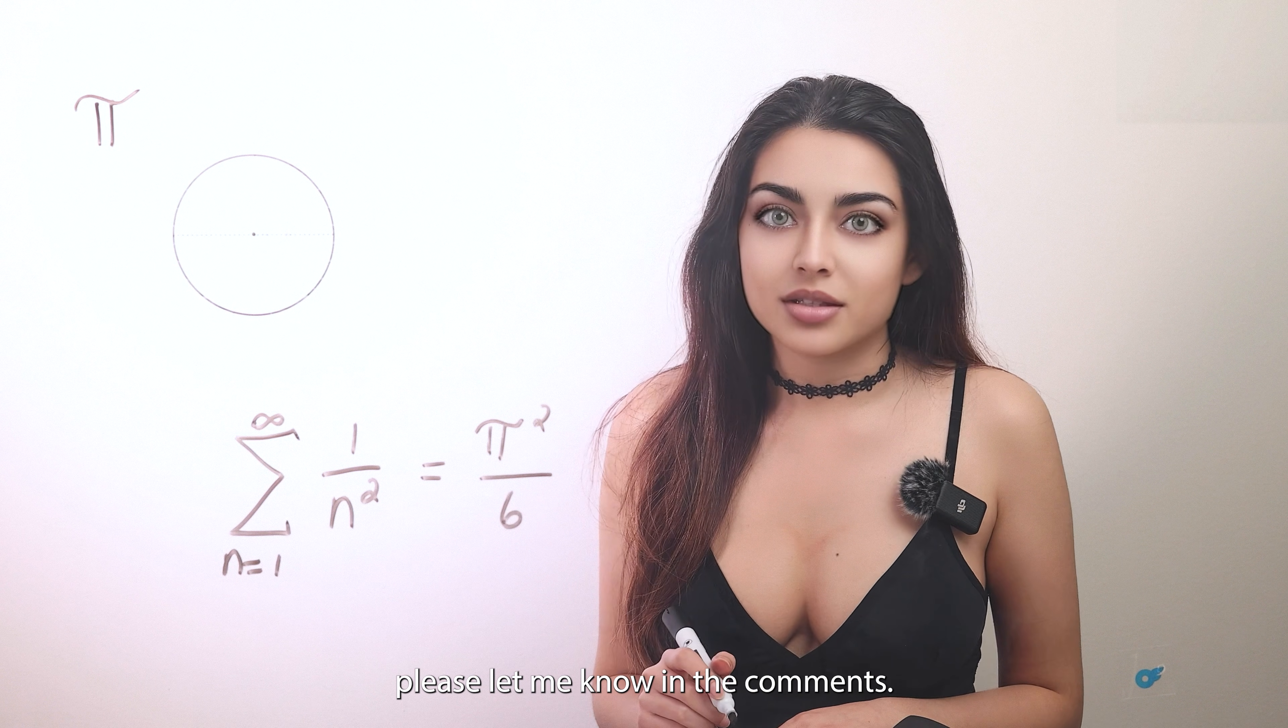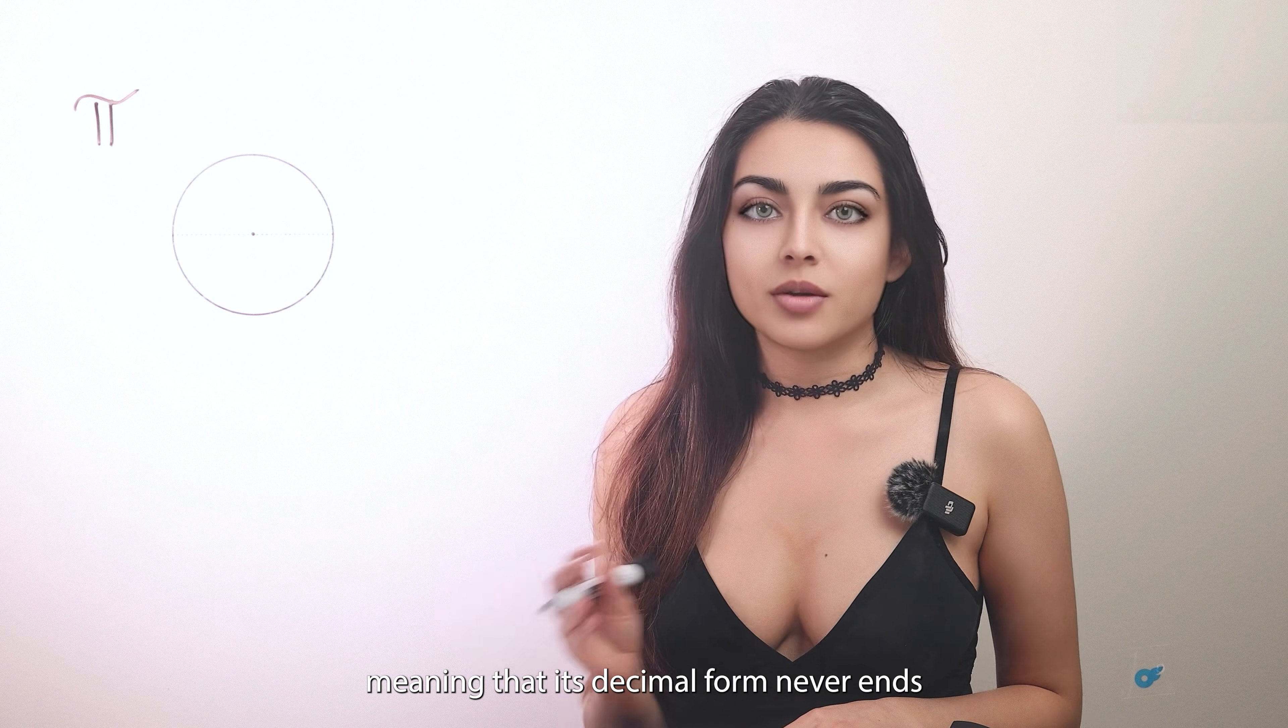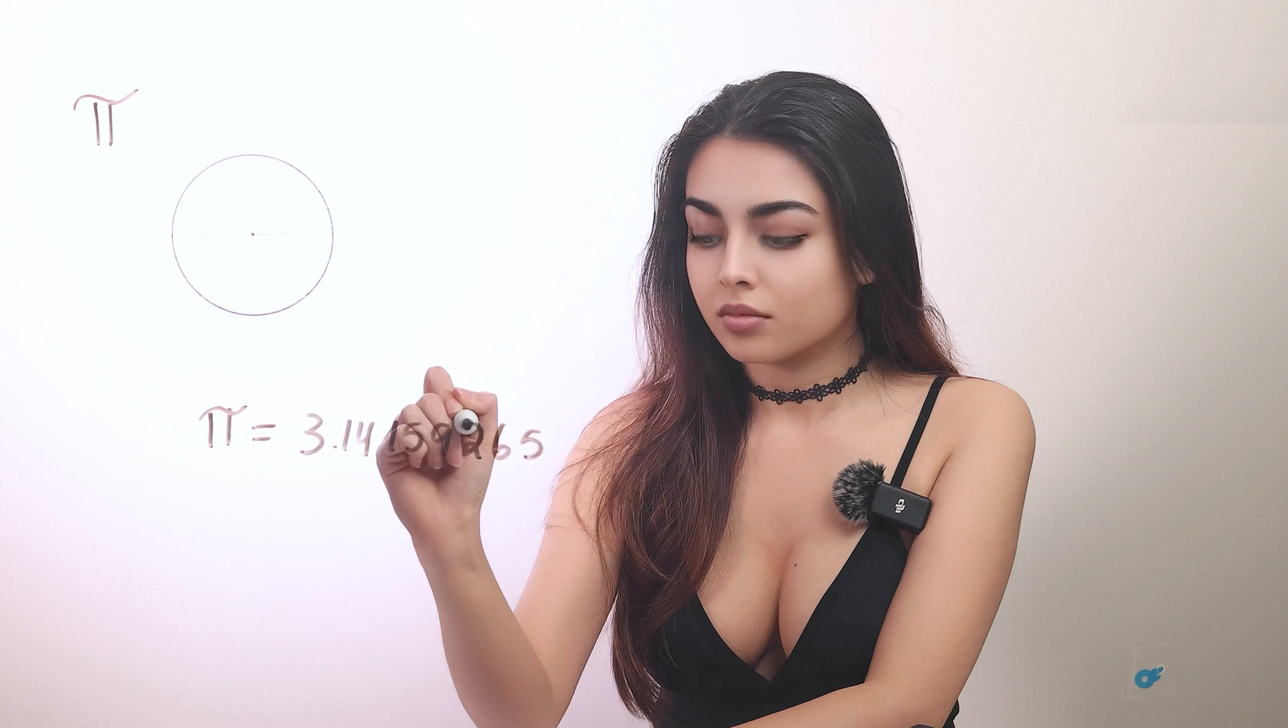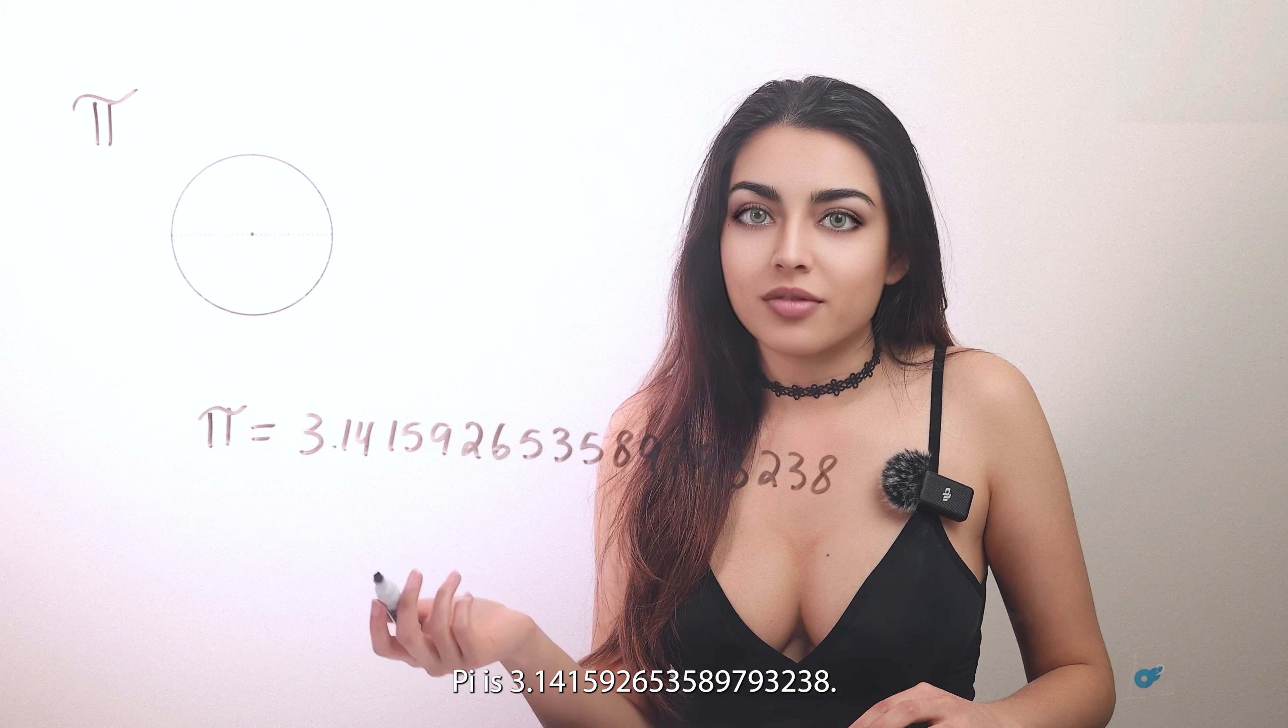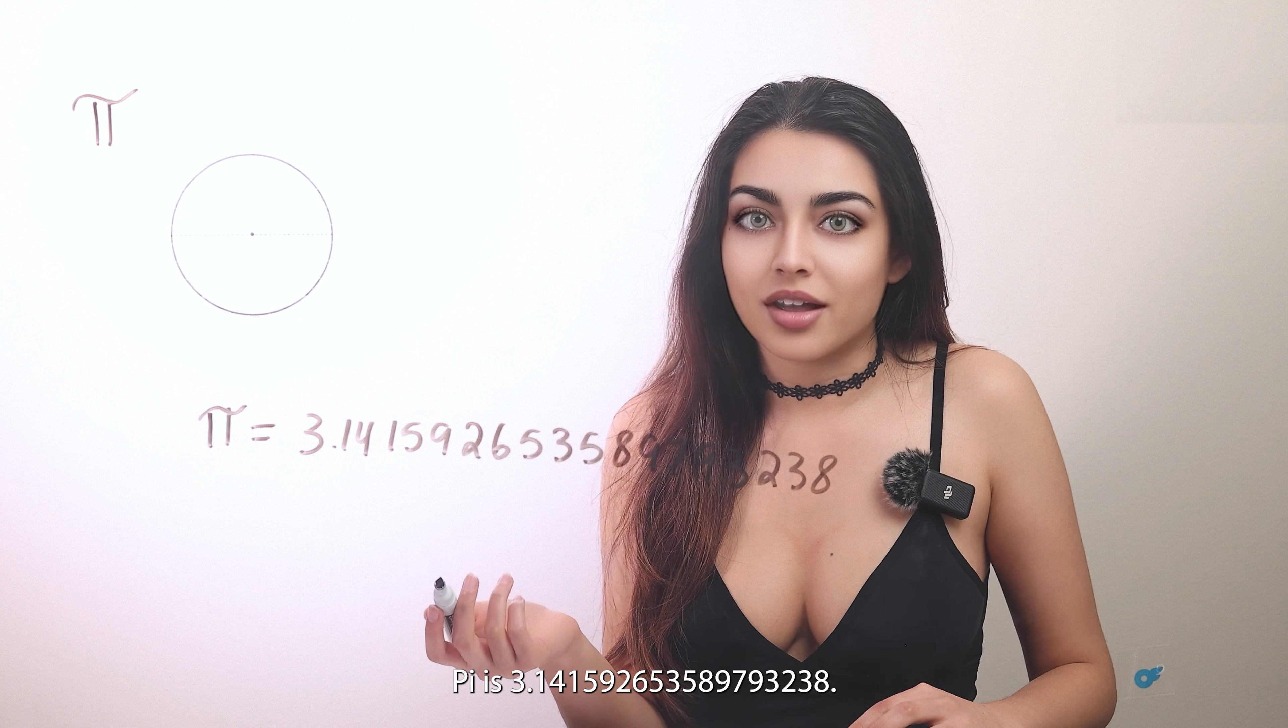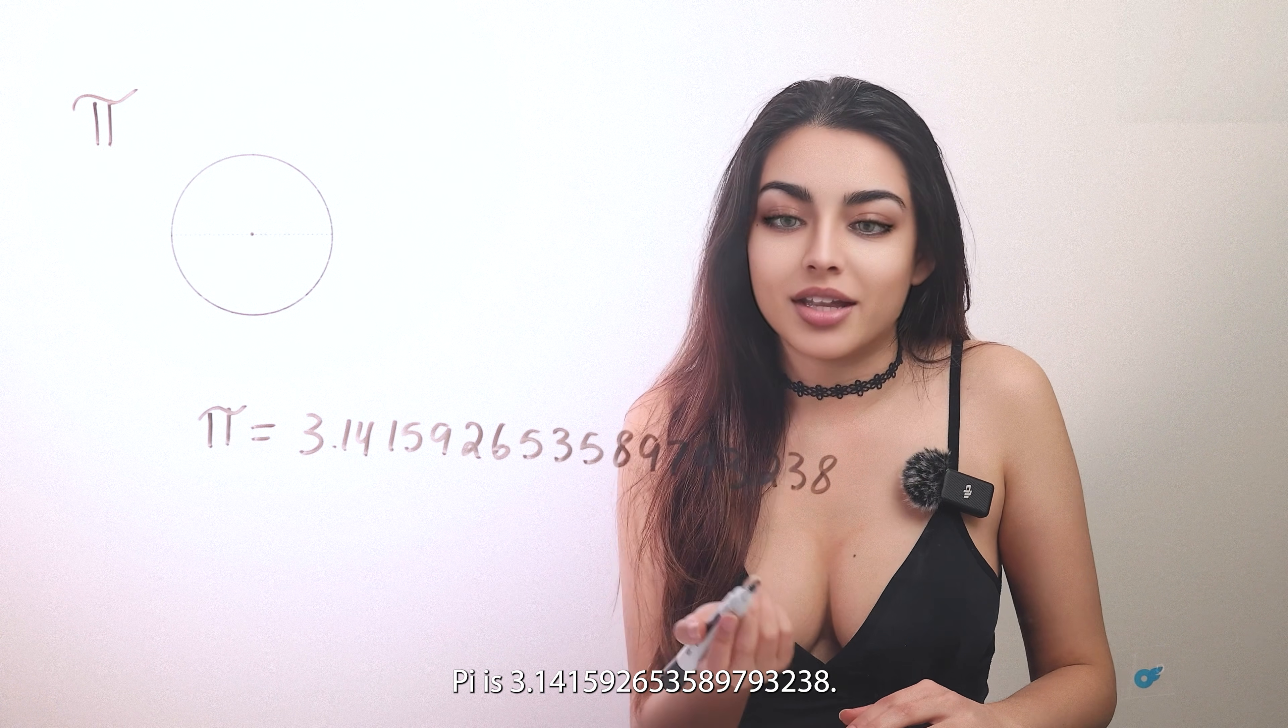Pi is an irrational number, meaning that its decimal form never ends. To only 18 decimal places, pi is 3.141592653589793238.